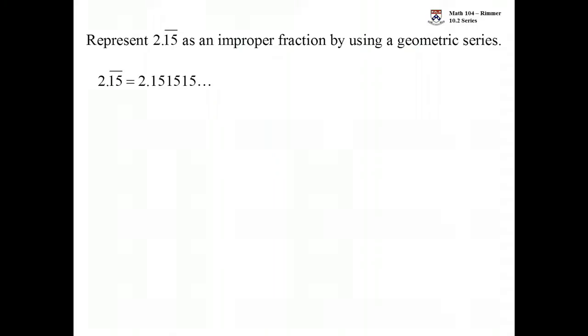You pull apart the integer part, the part that's not a part of the repeating. Then, for each chunk that gets repeated, you write it over the decimal place where that number is.